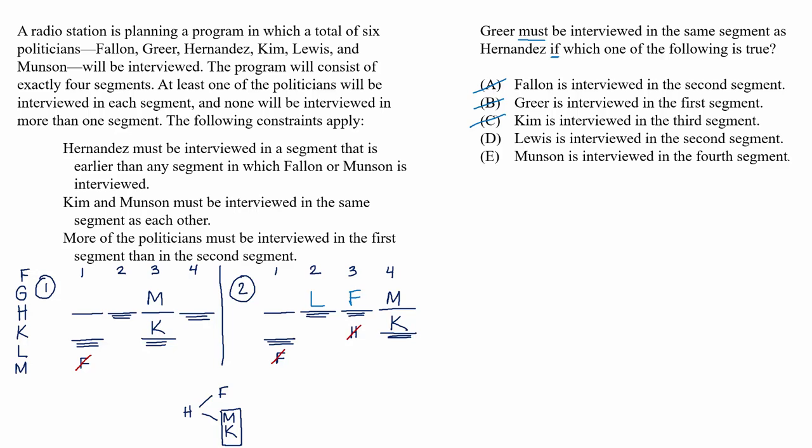And in scenario one, if Lewis were in the second segment, that would mean that Hernandez has to be in segment one in order to be earlier than Fallon, who would have to be in segment four. That would again force Greer into segment one alongside Hernandez. That means that we have our answer. If Lewis is interviewed in the second segment, it forces Greer and Hernandez to be together, and that's the result that we were looking for.